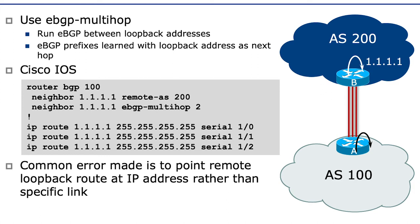A common error that folks make is to point the remote loopback route at an IP address rather than a specific link. The remote IP address could be reachable some other way. Suppose AS100 is connected to AS200 through some other path — that's a perfectly legitimate route and the eBGP multi-hop will quite happily function through that other route as well. So the three parallel links shown in the diagram may be down, but the BGP session may quite happily continue to function. This is not a situation that we want.